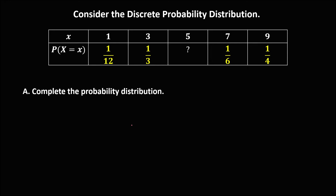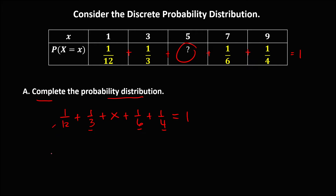For this new distribution, we again use the property that the sum of all probabilities equals 1. To find the unknown, we have 1/12 plus 1/3 plus x plus 1/4 equals 1. The highest denominator is 12, so we convert all fractions to have denominator 12. 1/12 stays as 1/12, and 1/3 becomes 4/12.